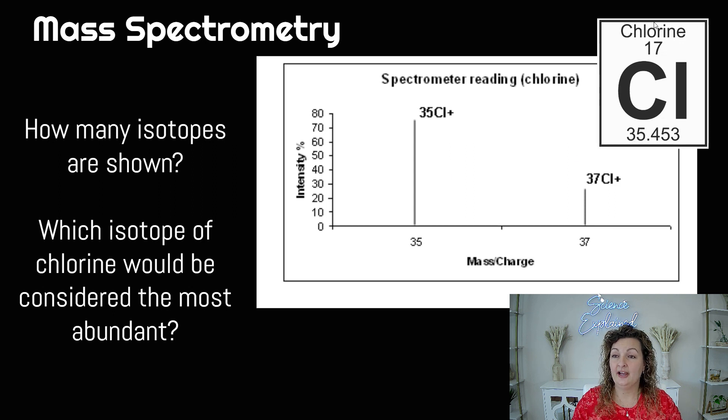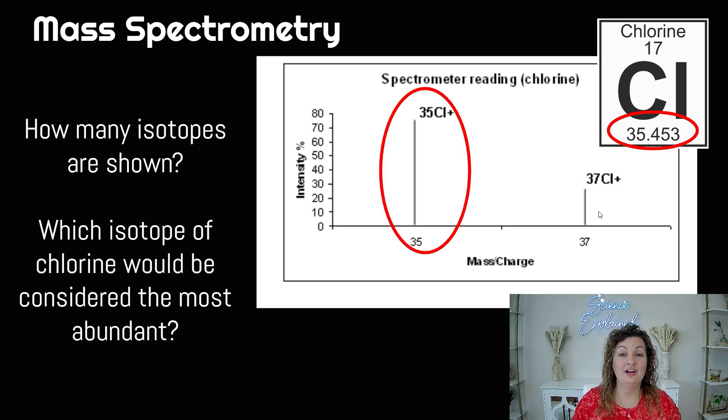And if we look over here at our periodic table, just to kind of check it, we can see that our number is 35.453. So it's very close to 35, almost exactly. However, we can see why we have a slightly larger number because we also have one that's slightly larger at 37. So this one is much more abundant in our universe than 37 is.